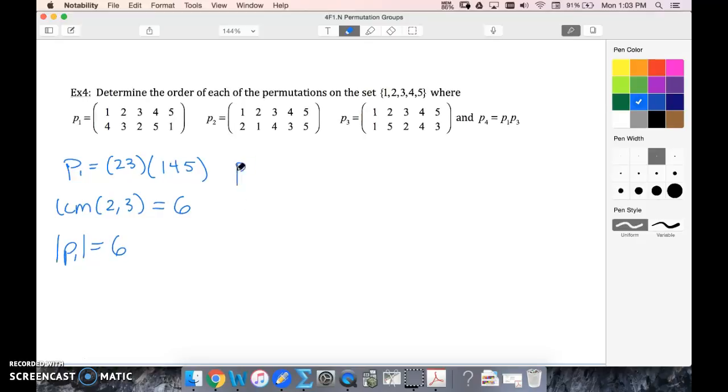All right, let's try that again for p2. (1,2) (2,1) (3,4) (4,3) (5,5). I could write that. I don't have to, and I don't have to because again, with least common multiple, that's just a size of 1, so it's not going to change my least common multiple. So now we've got the least common multiple of 2 and 2 and 1, which is of course 2. So the order of p2 is 2.